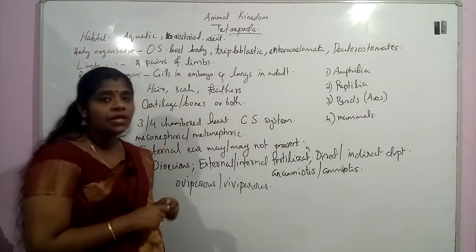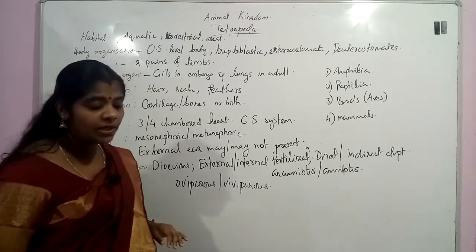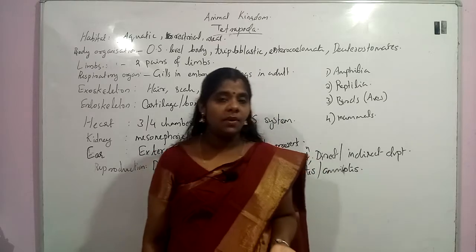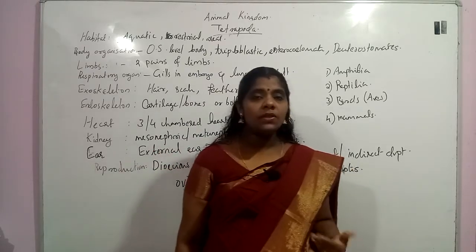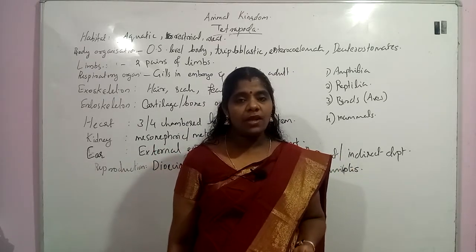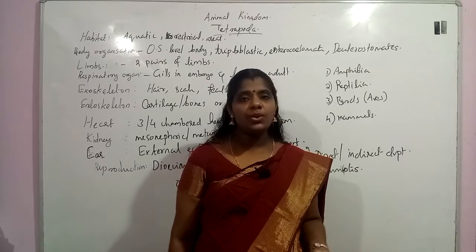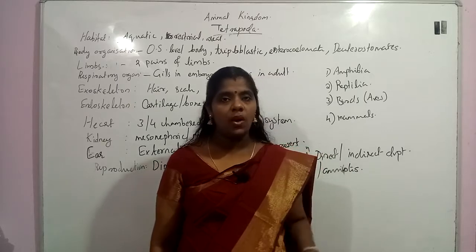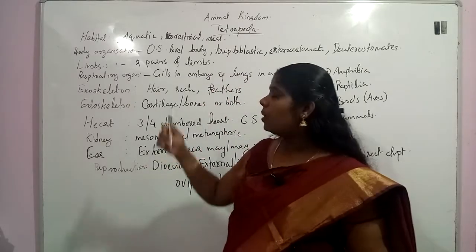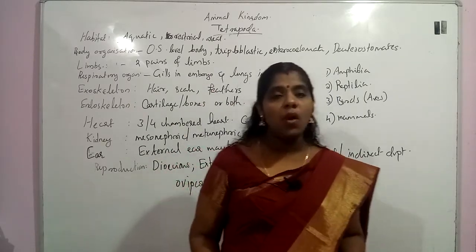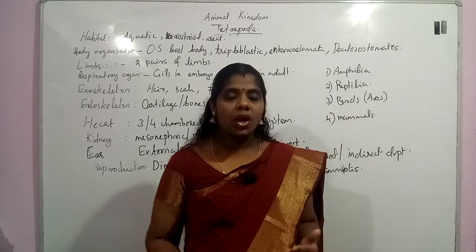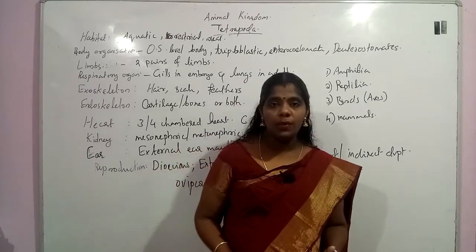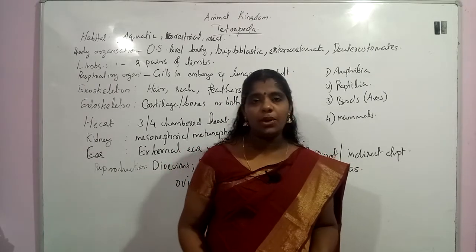We will see the characteristic features of this organism again. From the name Tetrapoda, they have four limbs or two pairs of limbs — two forelimbs and two hind limbs. The habitat may be aquatic, terrestrial, or aerial. They have a complex organ system level of body organization, are triploblastic with true coelom, enterocoelom, meaning deuterostomate.